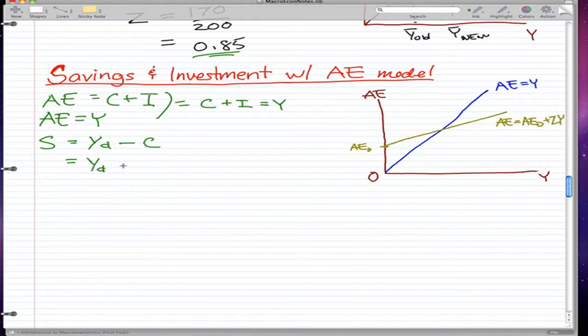We know that we can expand C to C naught plus BYD. And if we further expand minus into the bracketed equation, we get YD minus C naught minus BYD. That is equal to negative C naught plus YD minus BYD.